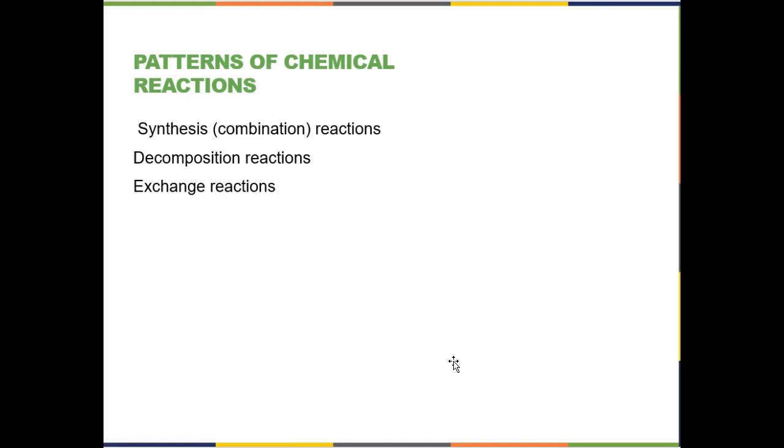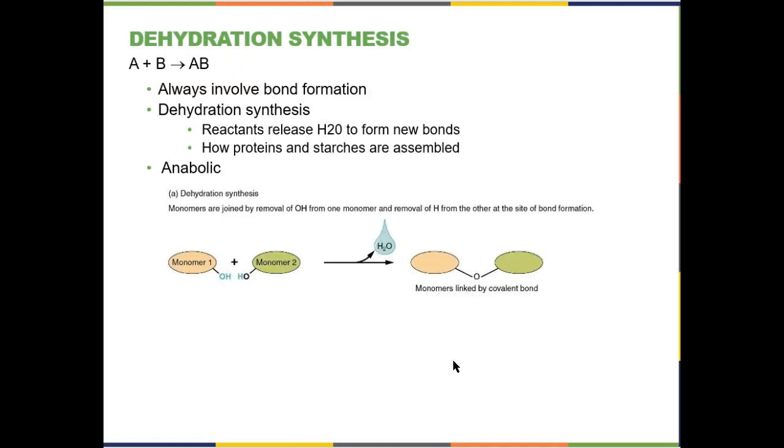So we always use the double headed arrow and understand that the forward reaction and the reverse reaction are always happening. And they happen at the same rate at equilibrium. Prior to equilibrium, for different energetic reasons, either the forward reaction or the reverse reaction is going to be favored. And then you get to equilibrium. So we're going to go over a couple of different chemical reactions. There's really only two that I'm going to want you to know. They are the two most important ones, a synthesis and a decomposition reaction that we care about. So first up, synthesis reactions in general is just taking small things, linking them together and making big things. The one synthesis, the specific synthesis reaction that I want you to be familiar with is called dehydration synthesis.